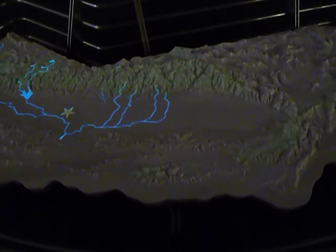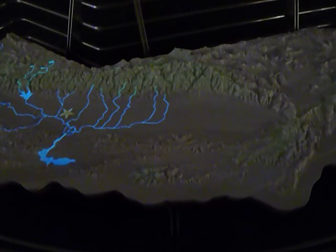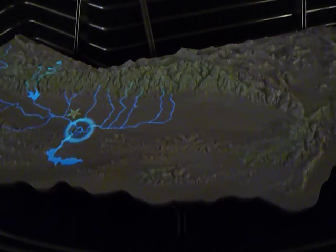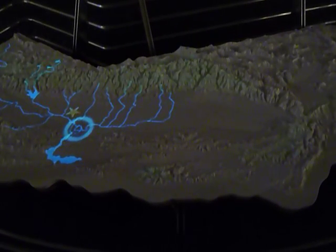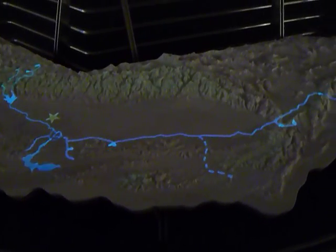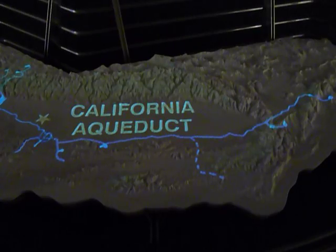Water released from Lake Oroville and runoff from the Central Valley flow into the Sacramento-San Joaquin Delta. Some of the water is lifted from the Delta and pumped into a huge concrete waterway called the Edmund G. Brown California Aqueduct.